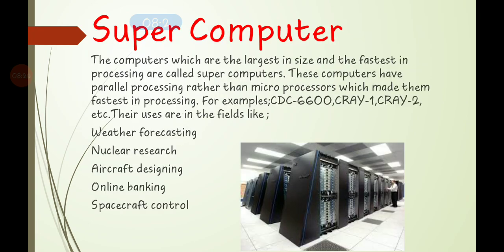Supercomputers are the largest in size and the fastest in processing. They use parallel processing rather than a single microprocessor, which makes them the fastest. Parallel processing means the processors are arranged in parallel, giving better processing speed. Examples include CDC 6600, Cray 1, and Cray 2. Supercomputers are used in weather forecasting, nuclear research, aircraft designing, online banking, and spacecraft control.